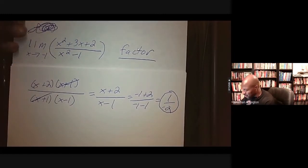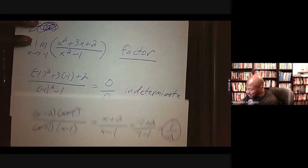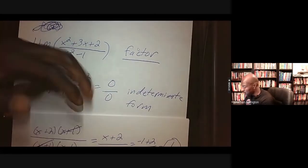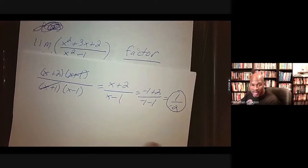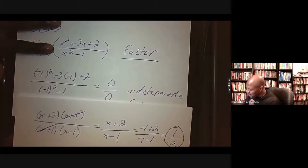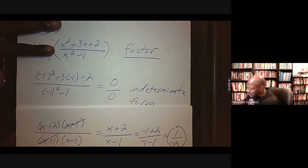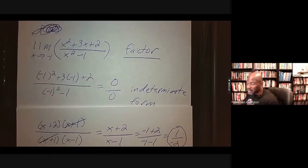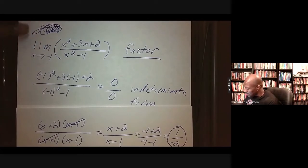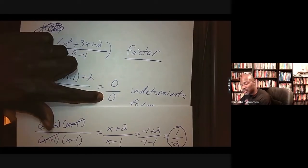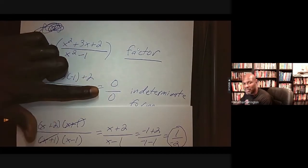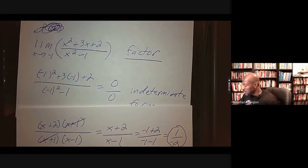To review our steps: first, plug the number in for x. If you get 0 over 0, get excited, then proceed to factor and simplify. It is possible to get 0 over 0 and the limit still not exist — that's a special case we'll cover later. But if you get a non-zero constant over 0 — like 7, 8, or negative 1 over 0 — there's no hope; you can stop. The limit will not exist.